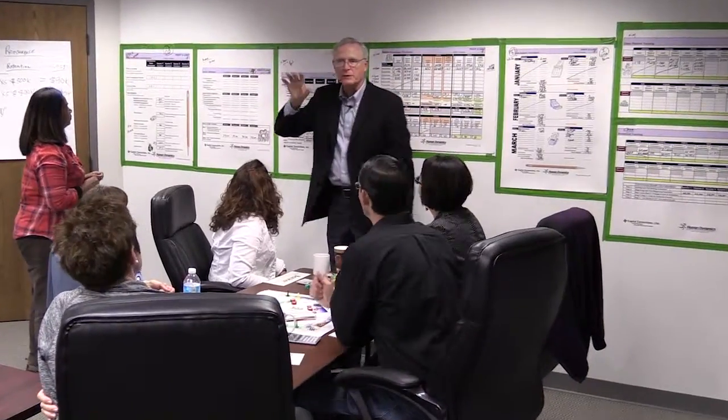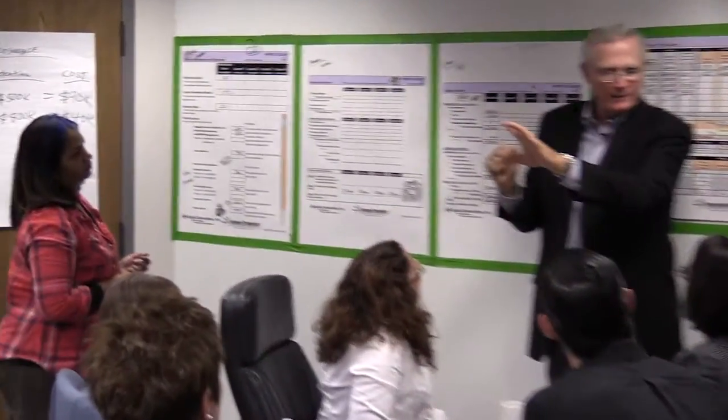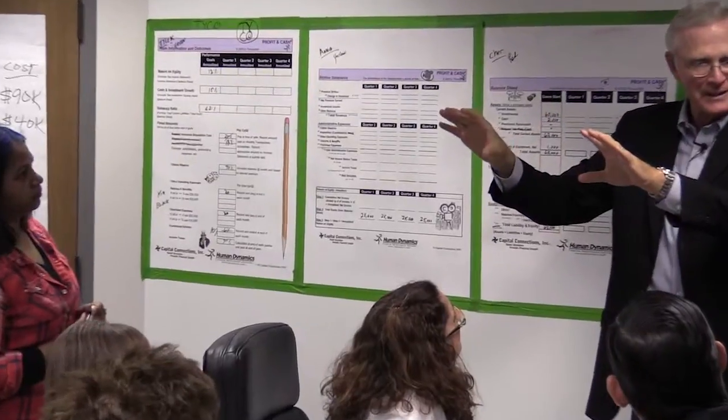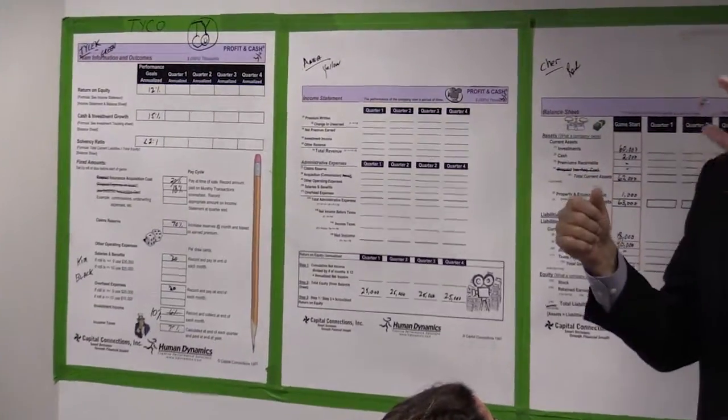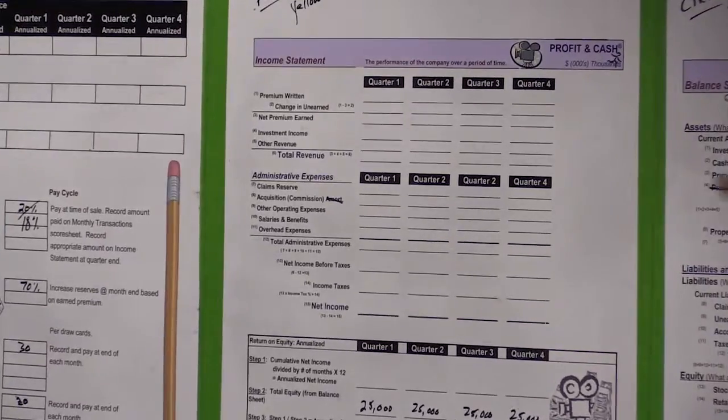An income statement is like a movie. You turn it on at the beginning of the fiscal period, and you turn it off at the end. So in our case here, January 1 to March 31. So it's activity.